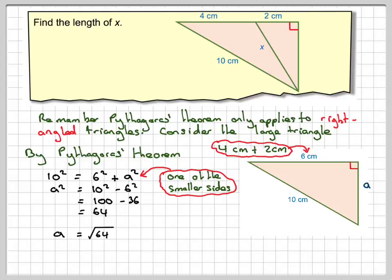A will be equal to the square root of 64, which is 8. So we know that this length here is 8 centimeters.